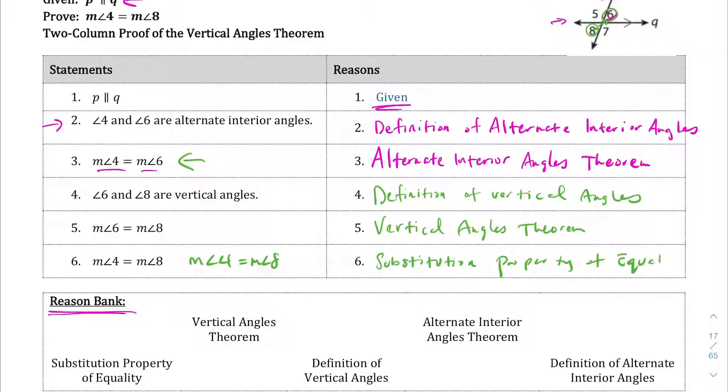Excuse my handwriting. I teach math, not English. I don't think they teach handwriting in English anyway. So there we go, that's the two column proof of the vertical angles theorem.